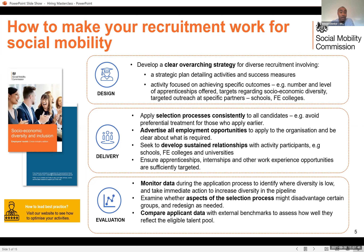For example, consider the number and level of apprenticeships your organisation can offer and how best to target them. We also recommend setting out recruitment and workforce targets, which could help drive internal success measures. It's important to ensure that targets are clear and realistic, and that progress towards them can be tracked. One way of increasing the likelihood that goals can be reached is by setting time-bound targets — what change will be achieved and by when. Organisations can also consider targeted outreach at specific partners such as schools and FE colleges in your local area.